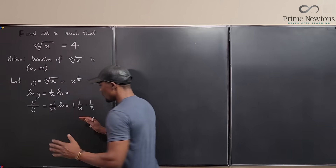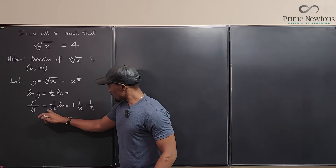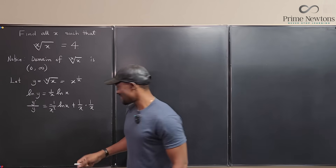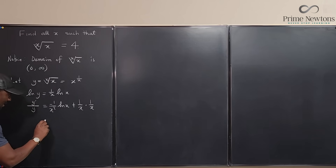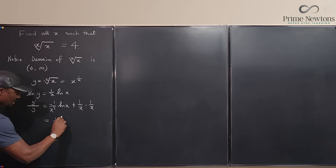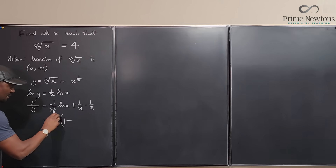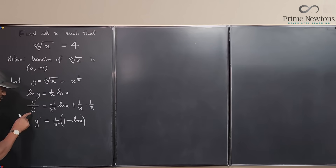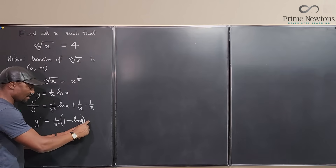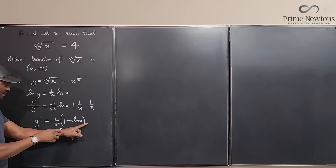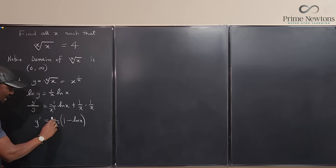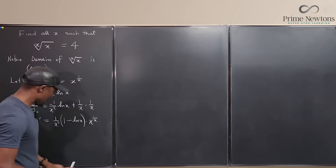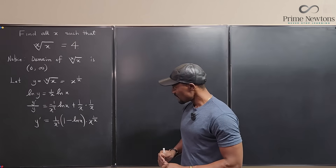So what we have is: we can factor 1/x² out, giving y′/y = (1/x²)(1 − ln x). Now I still have y′/y, but I want y′, so I multiply both sides by y, which is x^(1/x). So y′ = x^(1/x) · (1/x²) · (1 − ln x). That's our y prime.